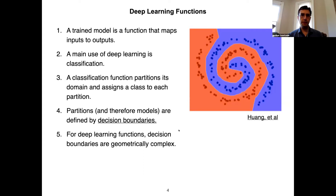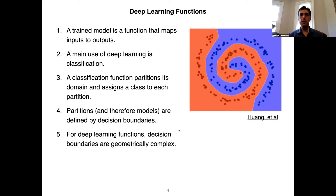I'm going to focus on classification uses of deep learning. Once we train a model to classify, we can think of it as a function that maps inputs to classes — I mostly have images in mind, but other types of inputs are possible too. What the model learns during training is that it partitions its domain and assigns a class to each partition. When an input comes in, it gets mapped to one of those partitions, and that partition's class is the output. These partitions are defined by the decision boundaries.